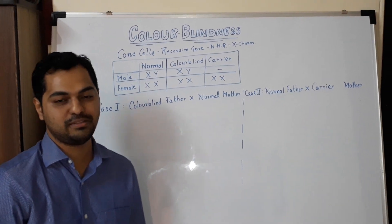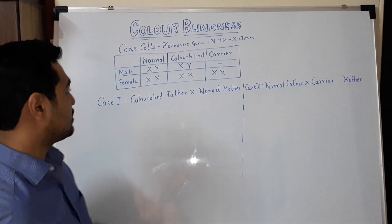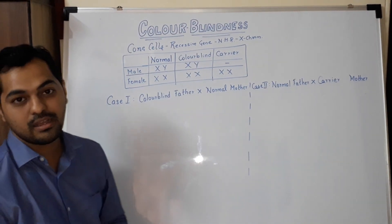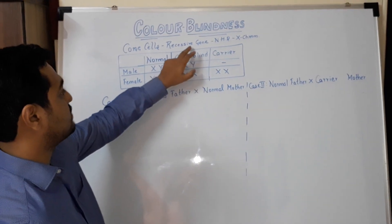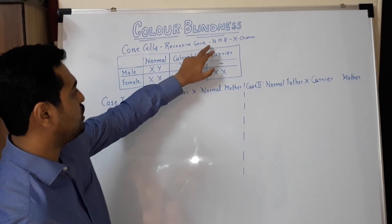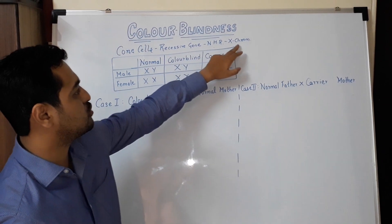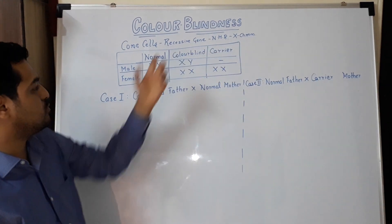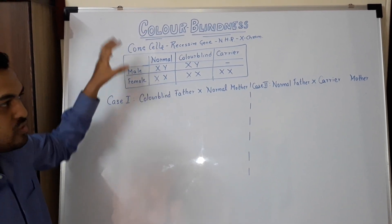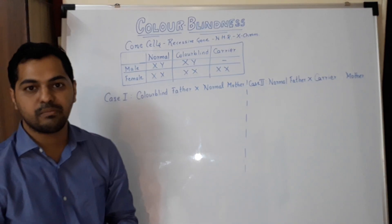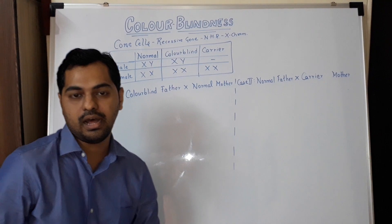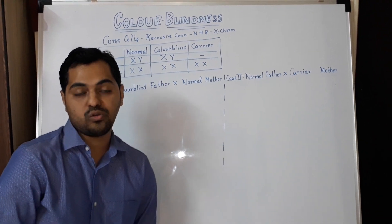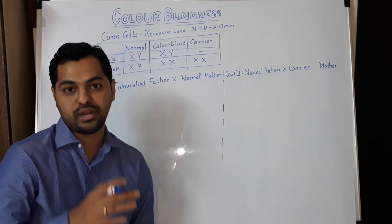Welcome to yet another video. The concept we're discussing today is color blindness. Color blindness is a sex-linked disorder — it occurs due to a recessive gene located on the non-homologous region of the X chromosome. Due to this recessive gene, the cone cells present in the retina become defective, and the person is unable to distinguish between red and green color, so the colors appear as gray. A particular chart known as the Ishihara chart is used to identify whether a person has this defect.